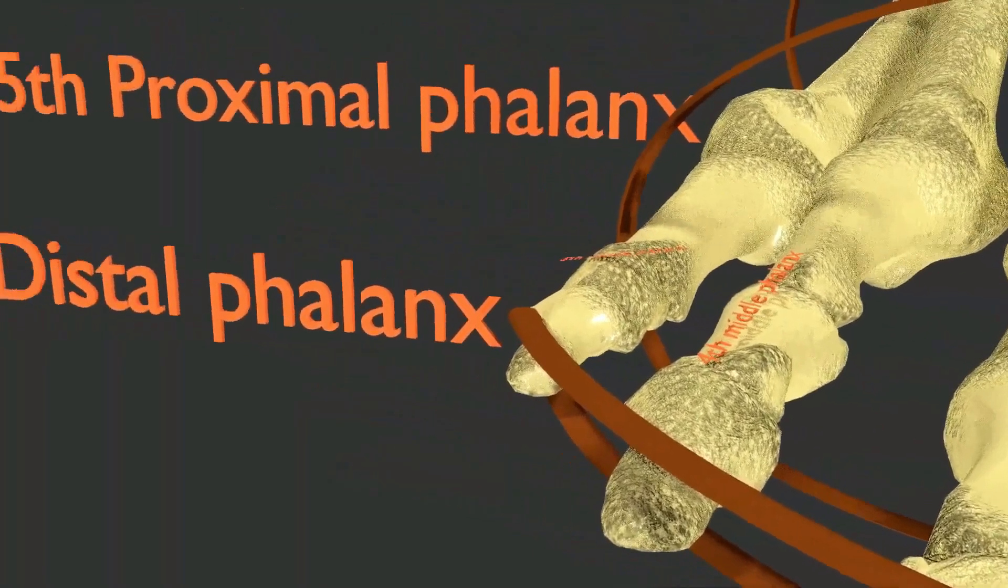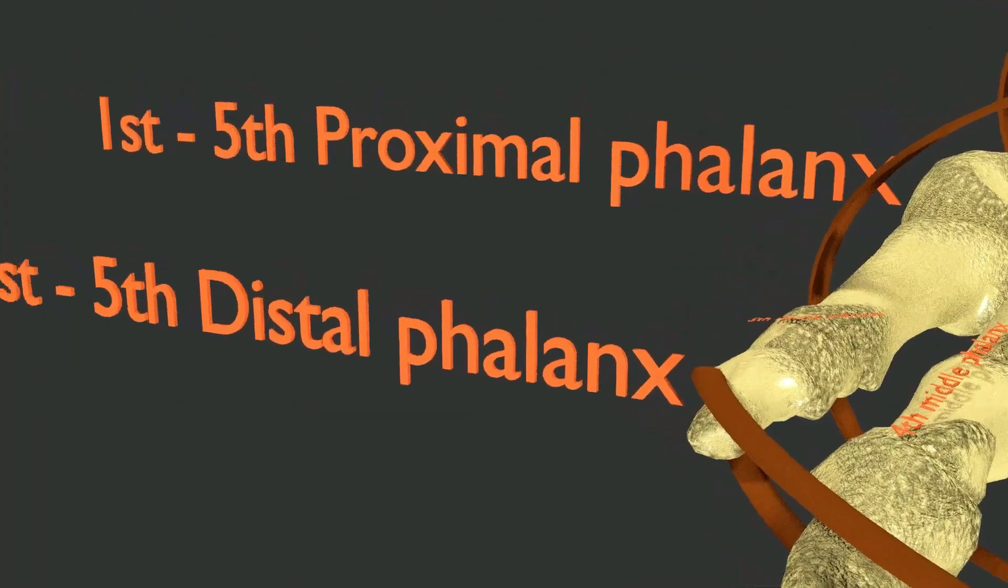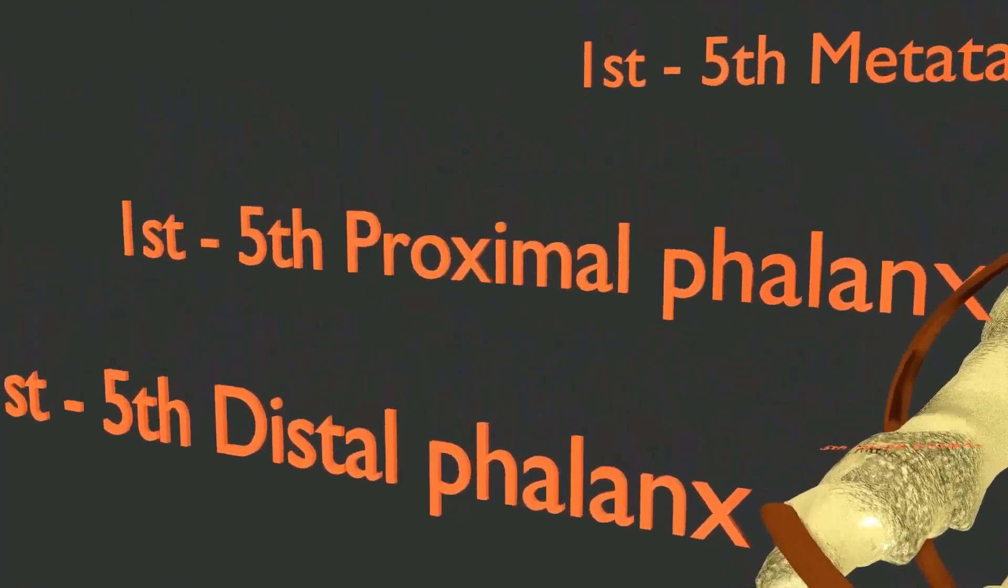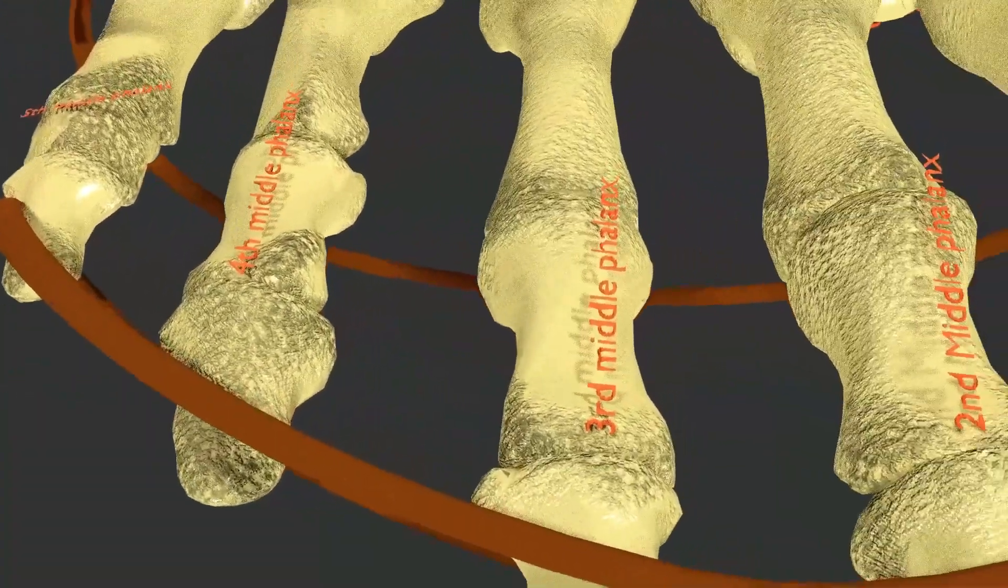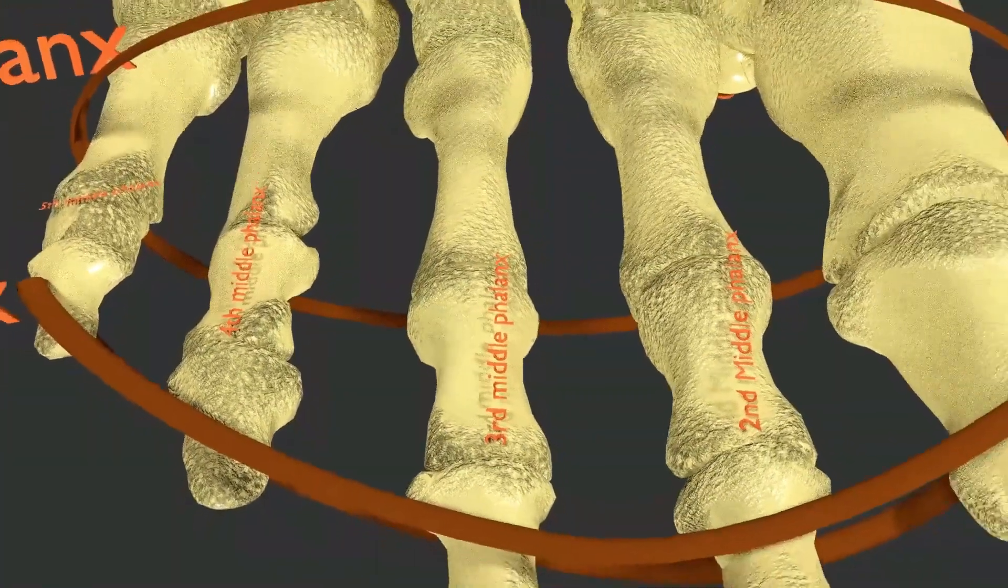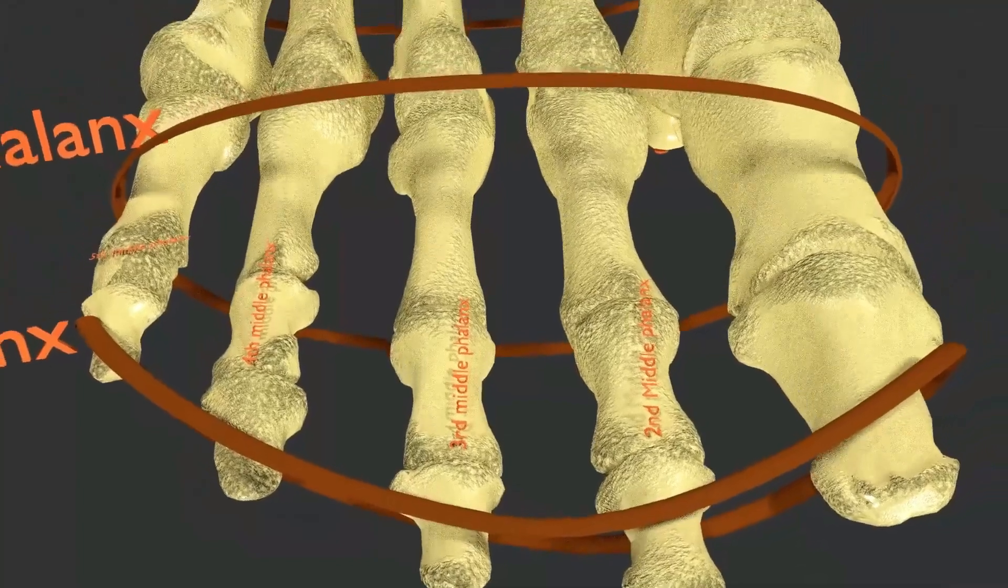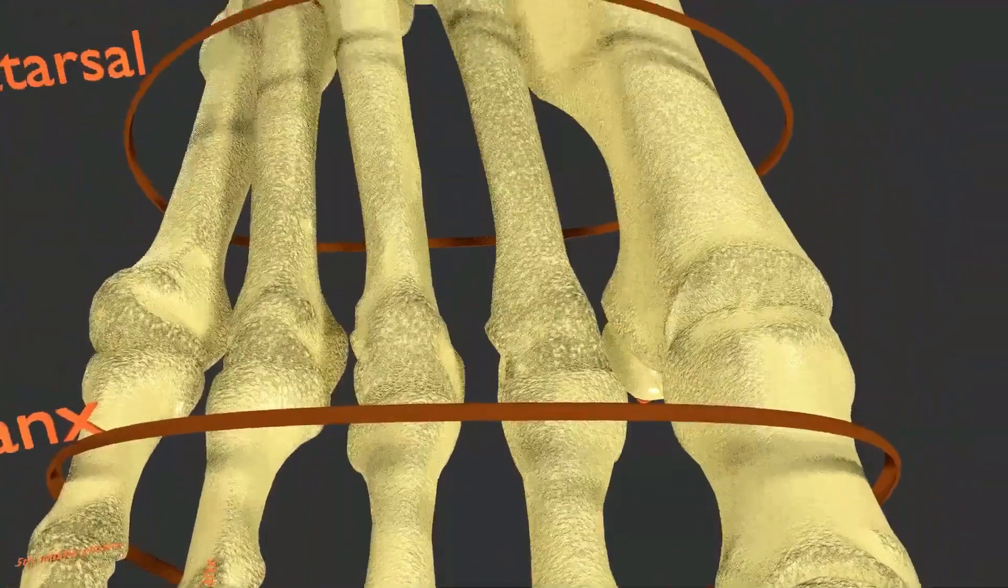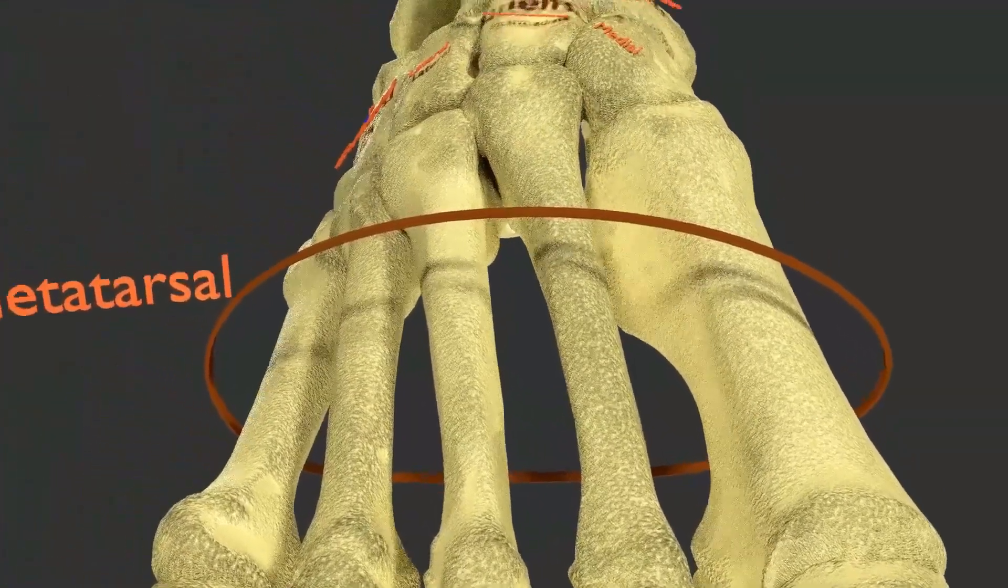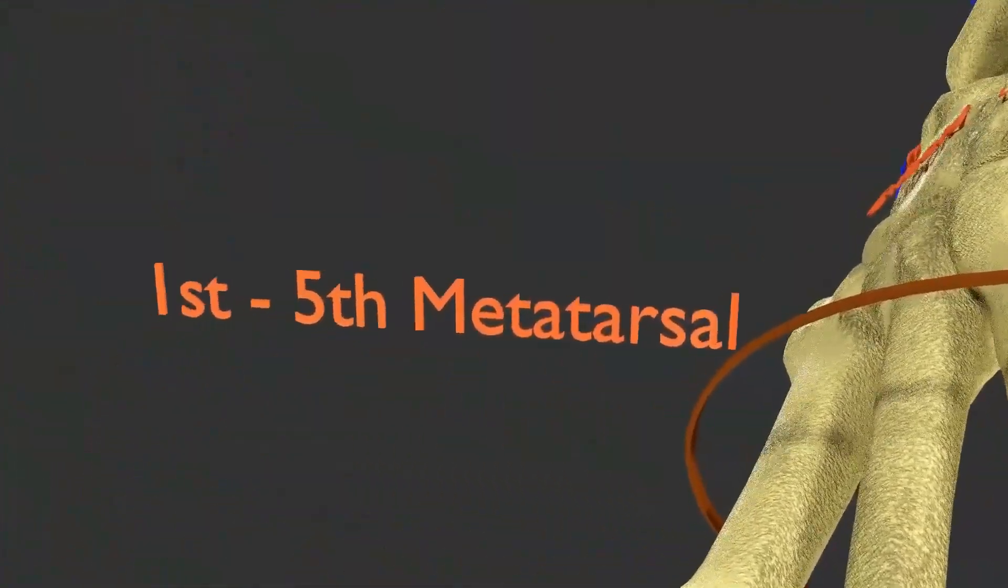Discussing the distal bones, here you are seeing the first five distal phalanx followed by the five proximal phalanx. Now you see the four middle phalanx present in all the phalanges except the great toe.